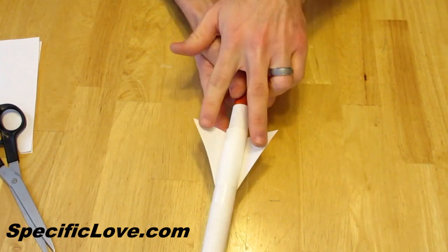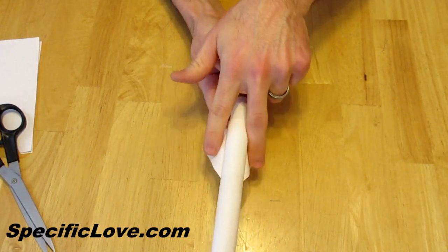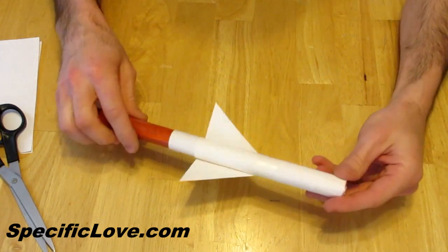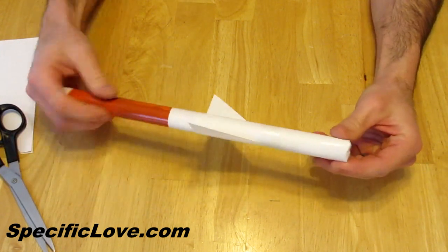Now if they're too far in, you can always take your fingers, slightly crease them a little bit and they'll go flatter. But that's it. That is the paper rocket.